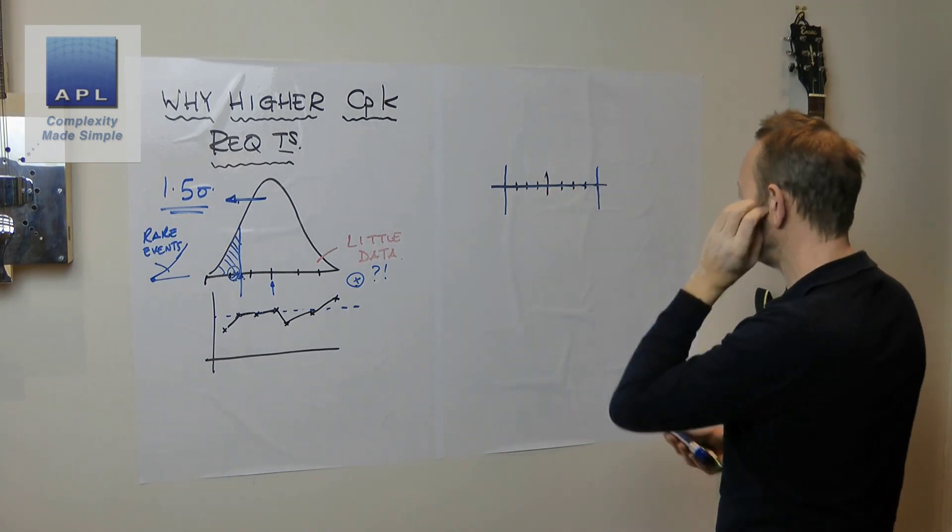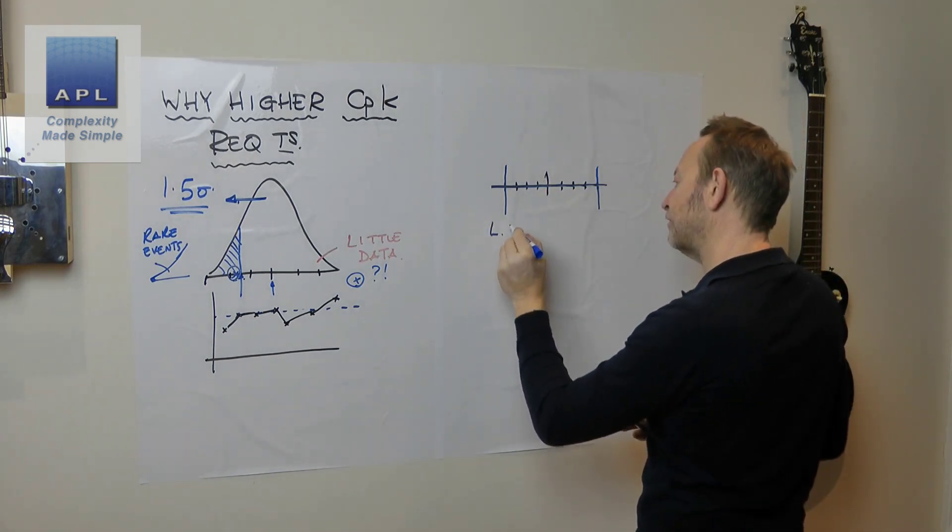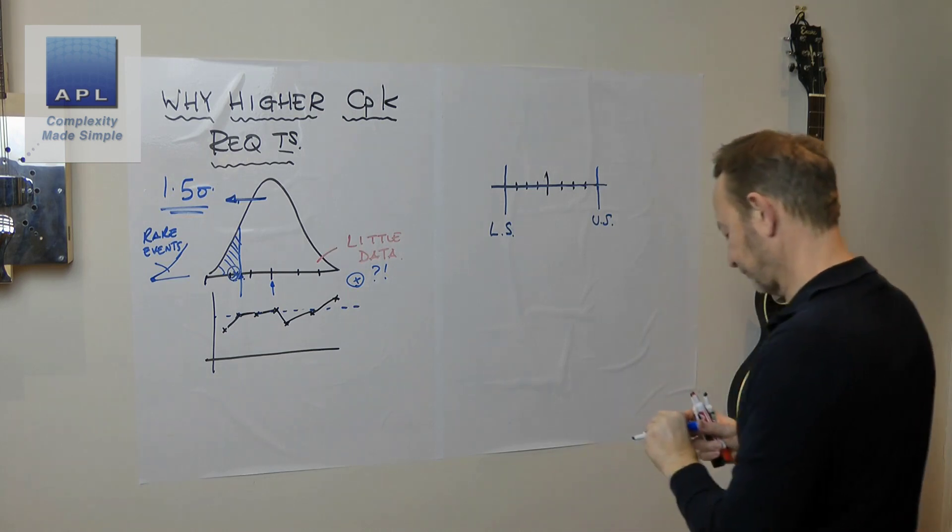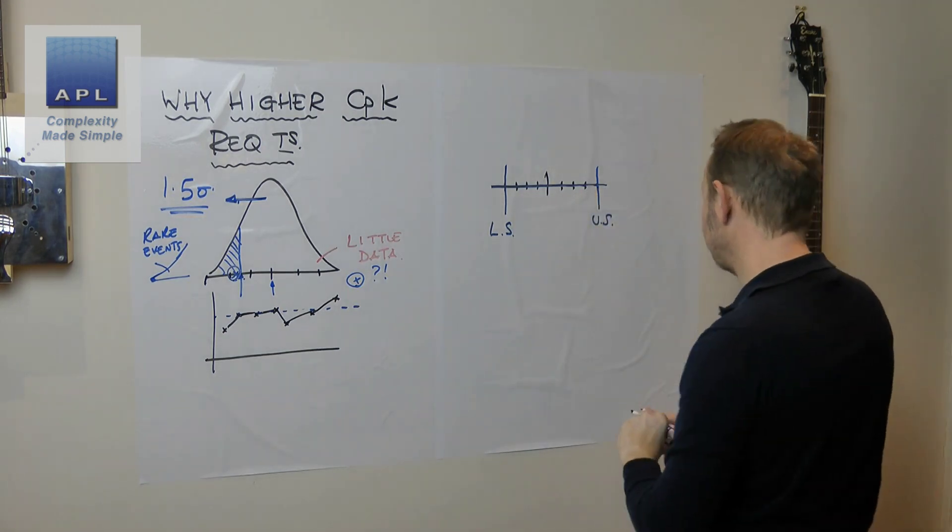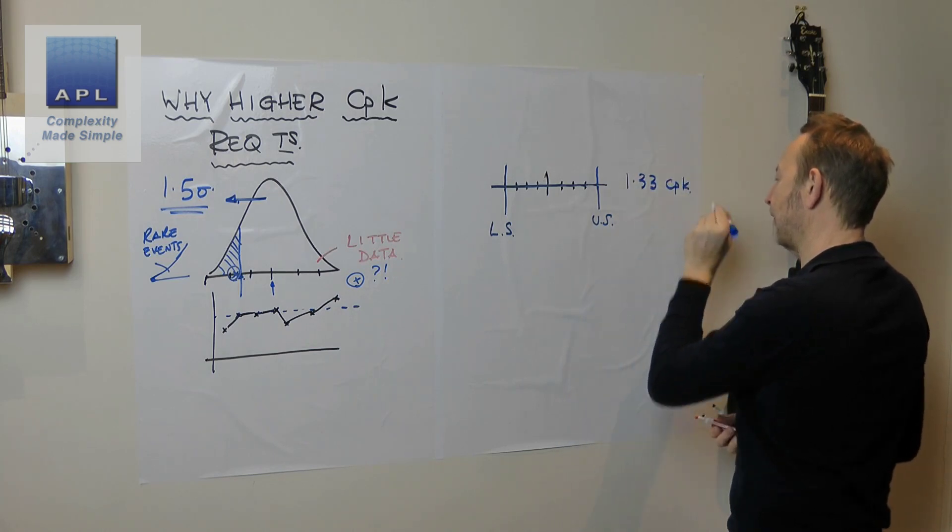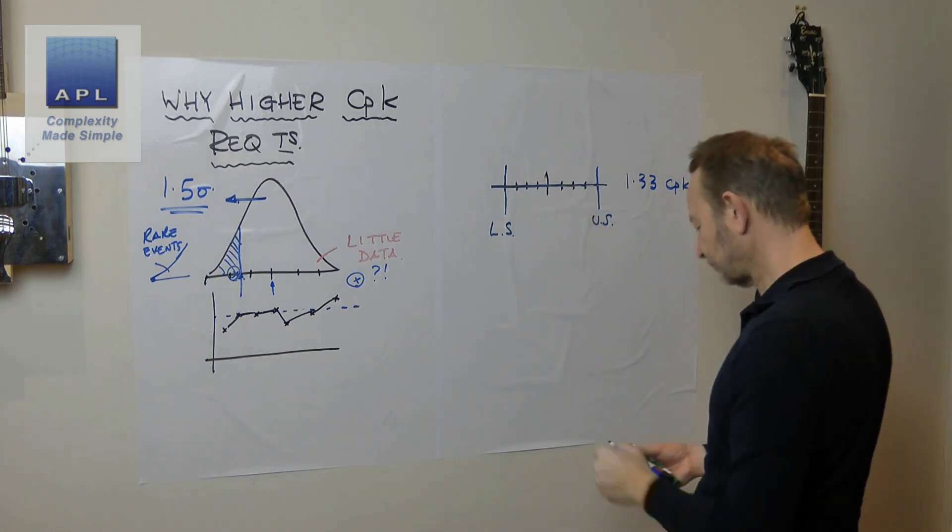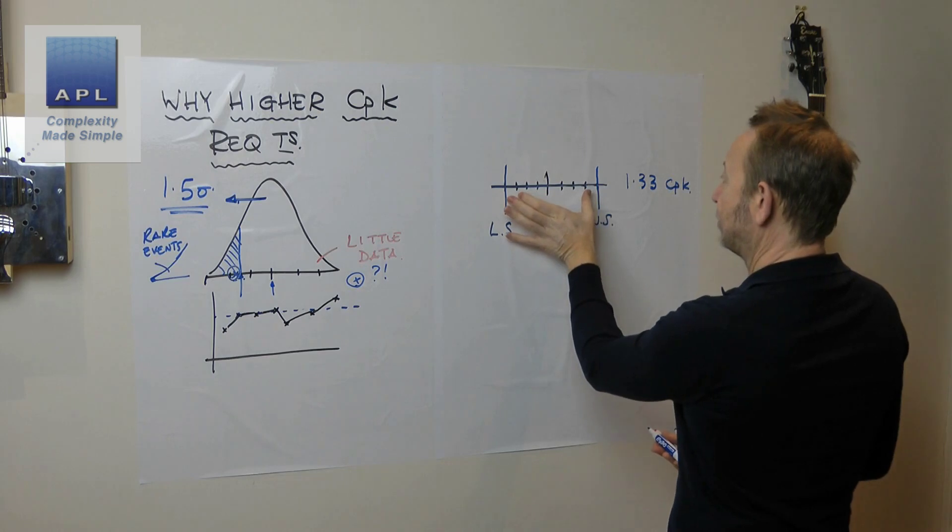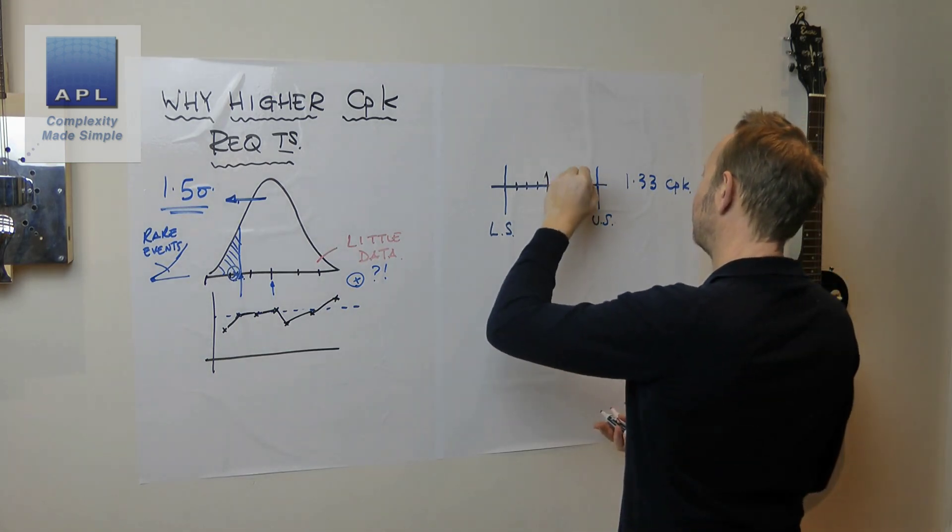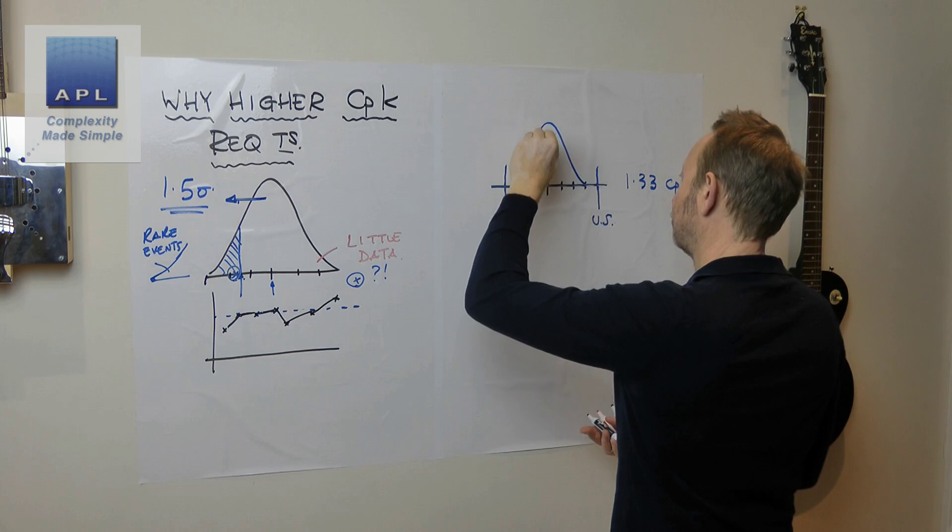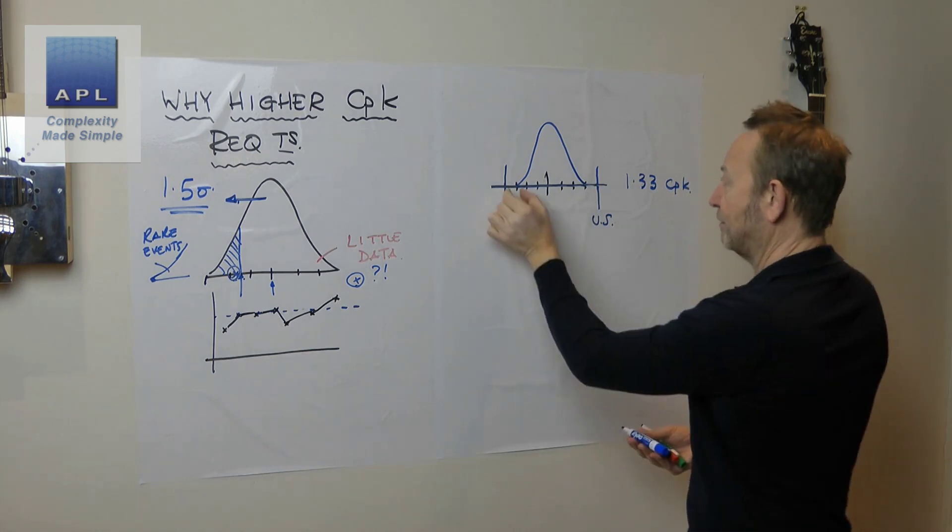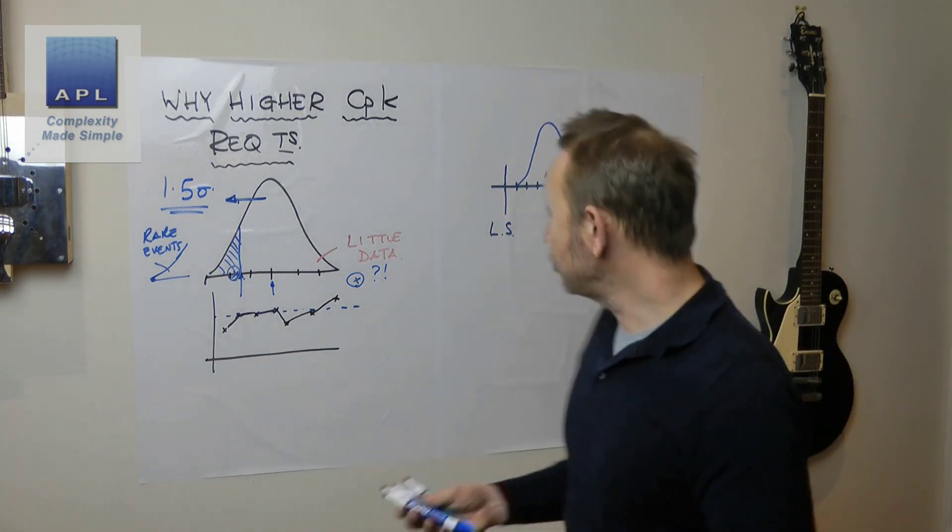I've got a tolerance. This is the lower specification limit, this is the upper specification limit. This is a 1.33 CPK. What that means is it contains four standard deviations. If I draw a distribution in there, the distribution would cover plus or minus three, and there would be a standard deviation spare here.